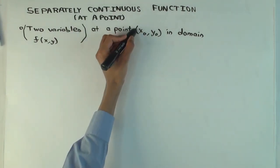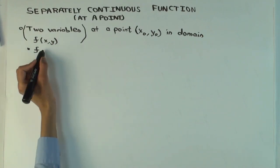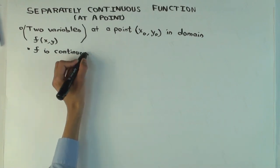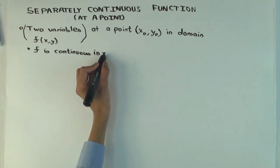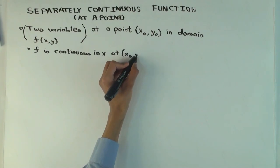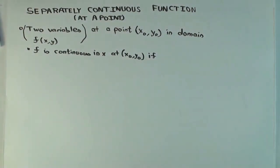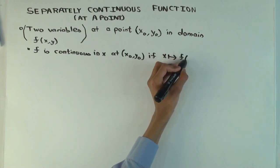And so we say that f is continuous in x, or with respect to x, at this point if—what function should be continuous? The function f(x, y0). So this function is continuous at x0.